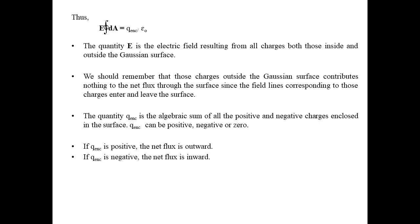The quantity E on the left-hand side is the electric field resulting from all charges, both those inside and outside the Gaussian surface. We should remember that charges outside the Gaussian surface contribute nothing to the net flux through the surface, since the field lines corresponding to those charges enter and leave the surface. The quantity Q-enclosed on the right-hand side is the algebraic sum of all the positive and negative charges enclosed in the surface. Q-enclosed can be positive, negative, or zero. If Q is positive, the net flux is outward, and if Q-enclosed is negative, the net flux is inward.